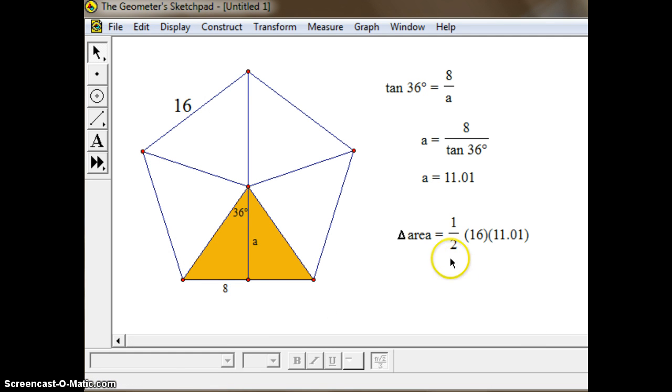So to get the area of the triangle, we do one half of the base area, base length, which is 16, times the height, which we figured out to be 11.01. And we'd plug in this formula. And there is the area for that one triangle.